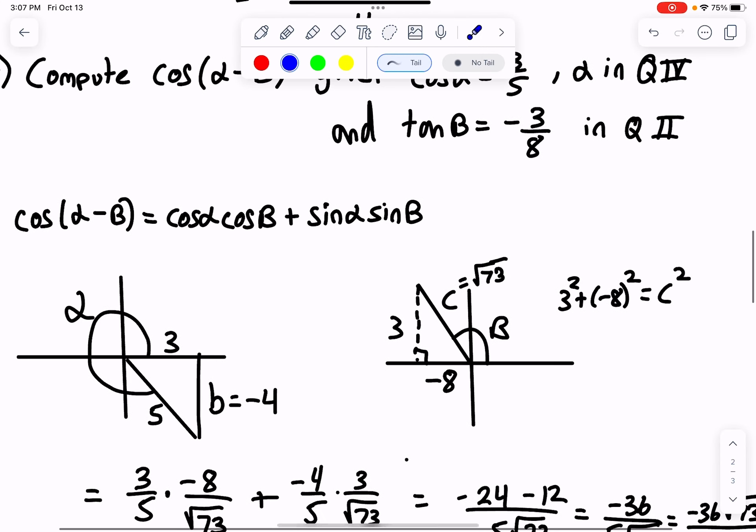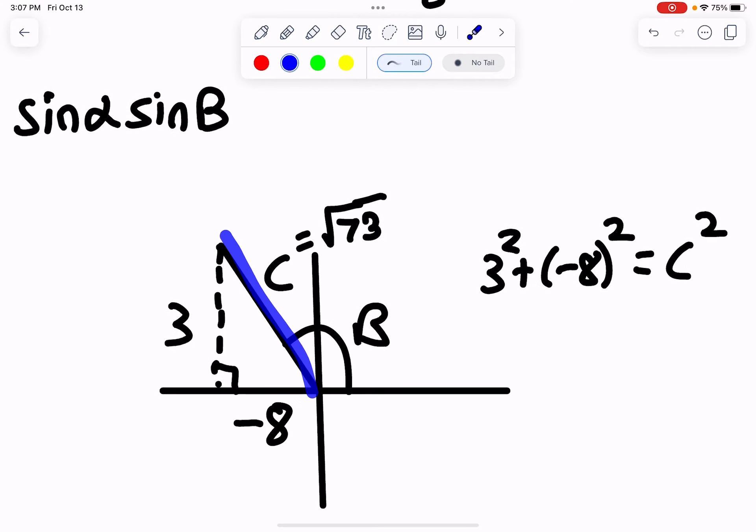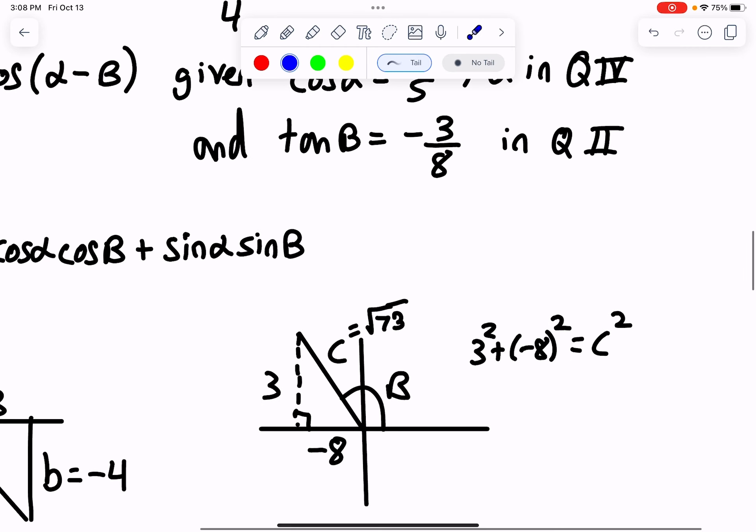We do the same thing with tangent beta, which equals negative three-eighths in the second quadrant. I draw the picture with beta in the second quadrant and drop my perpendicular. Tangent is opposite over adjacent. Since we're in the second quadrant, the opposite side gets the positive sign, that's three, and the adjacent side gets the negative value. Together they give negative three-eighths. We use the Pythagorean theorem to solve for the hypotenuse, which is square root of 73.